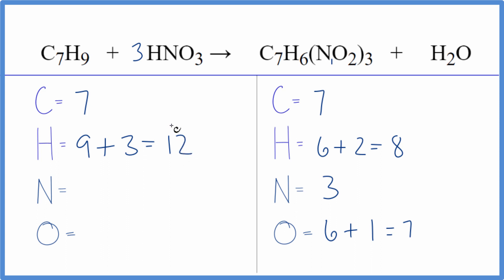So we have 12 hydrogens now. We have 1 times 3, 3 nitrogens, so we balance those. And then oxygens, 3 times 3. That gives us 9.